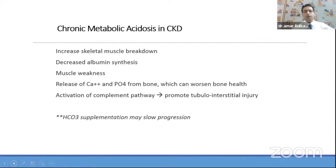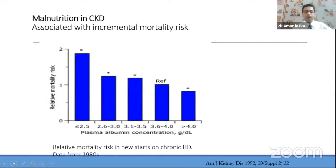Another problem is metabolic acidosis in CKD. It causes muscular breakdown, low albumin synthesis, muscular weakness, and mobilization of calcium and phosphorus from bone — contributing to mineral bone disease as well. We need to correct this by giving alkali supplements. By documenting bicarbonate levels and correcting acidosis, we can retard the progression of CKD.